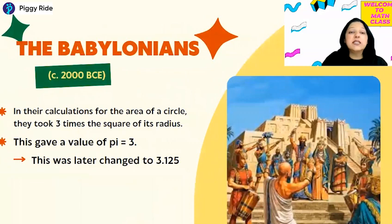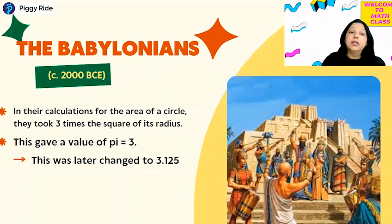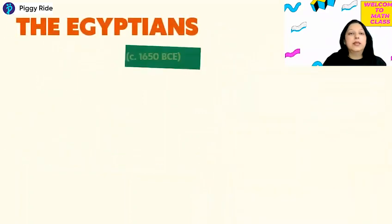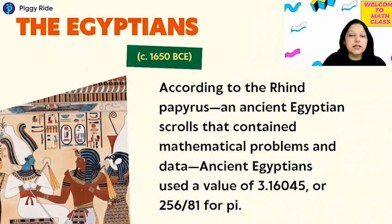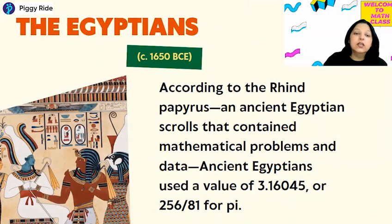The Babylonians gave a value of pi as 3, which was later refined to 3.125. After the Babylonians, the Egyptians used a value of pi as approximately 3.16045, or in fractions, 256 by 81.